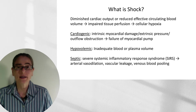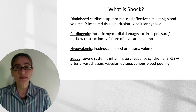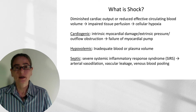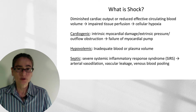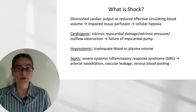That's shock in a nutshell. We generally think of there being three different types of shock: cardiogenic, hypovolemic, and septic. Cardiogenic shock occurs when you have intrinsic myocardial damage, such as a myocardial infarction, extrinsic pressure such as a cardiac tamponade, or outflow obstruction such as a massive pulmonary embolism.